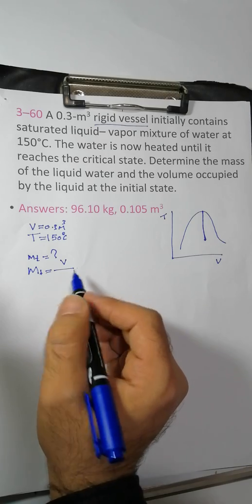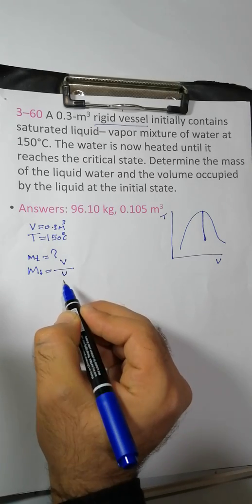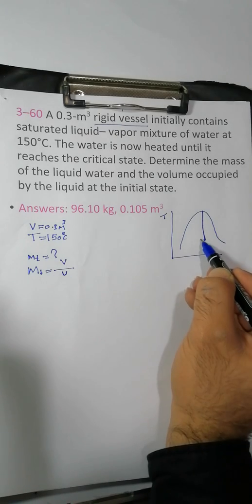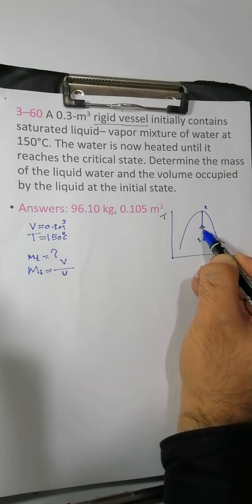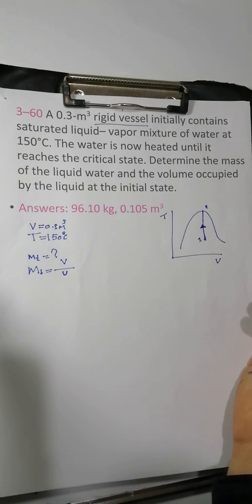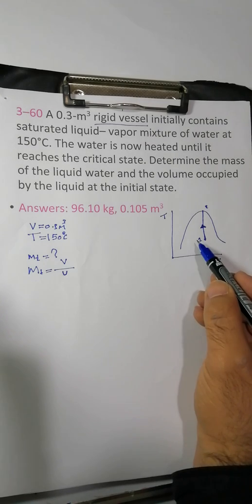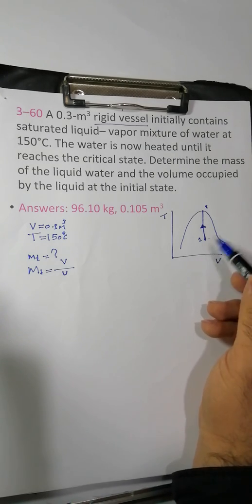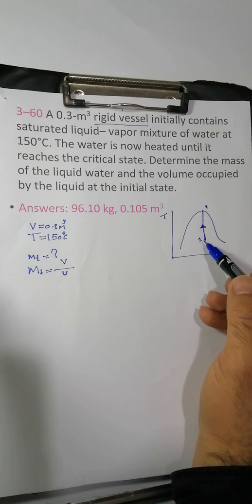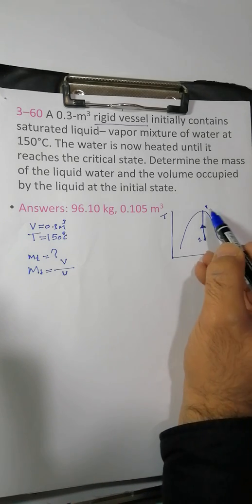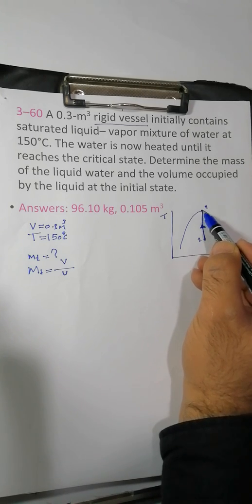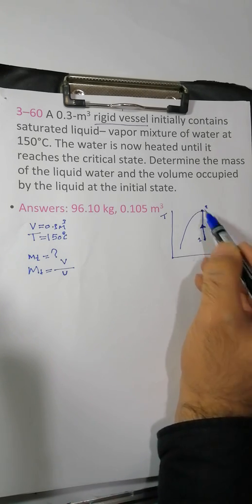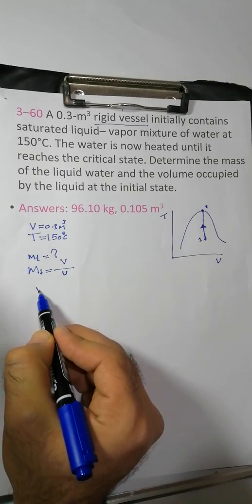It's the specific volume — not the total. The state uses VF and x·VFG. The value of VF is part of the sum, and V equals the total specific volume.